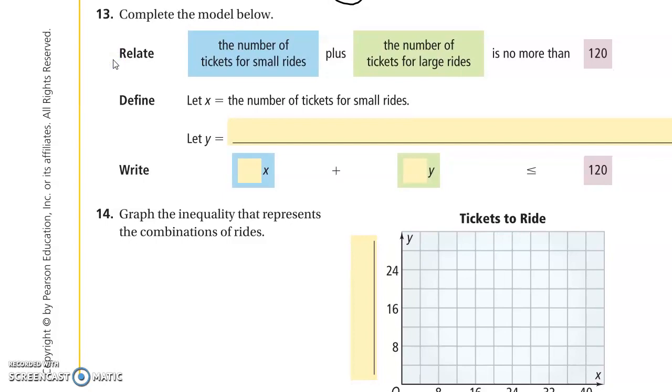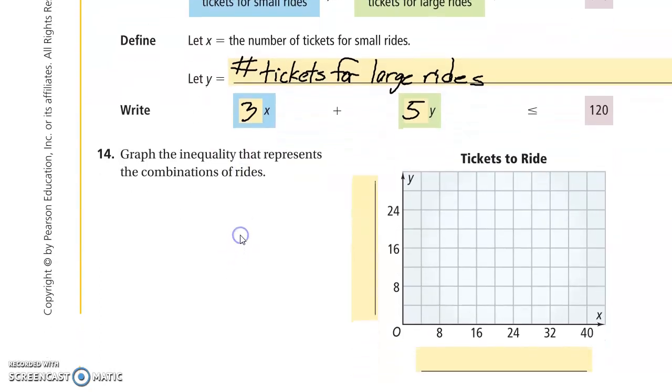Complete the model below. The number of tickets for small rides plus the number of tickets for large rides is no more than 120. Let X be the number of tickets for small rides. Let Y be the number of tickets for large rides. So 3X plus 5Y is less than or equal to 120.